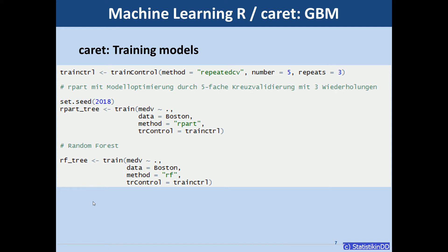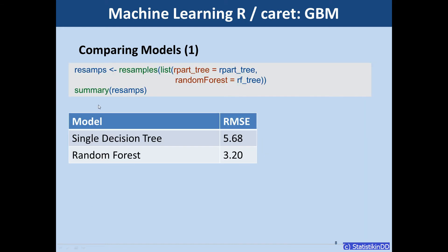So now we want to see how the random forest model compares to the single decision tree. And of course we use cross-validation and Caret makes this very easy. It provides us with a resamples function. So we just pass it a list with the models. It's two in this case.